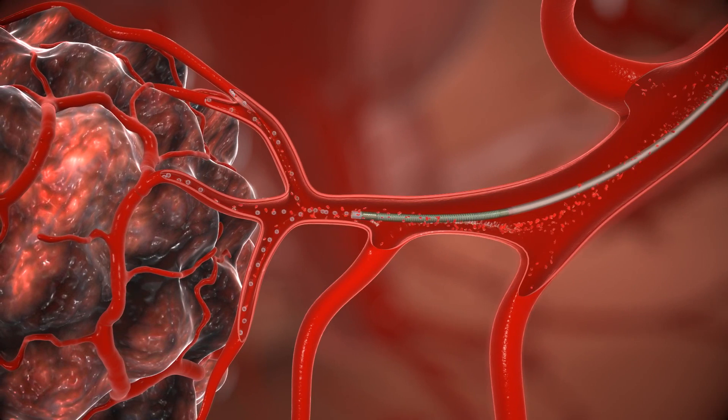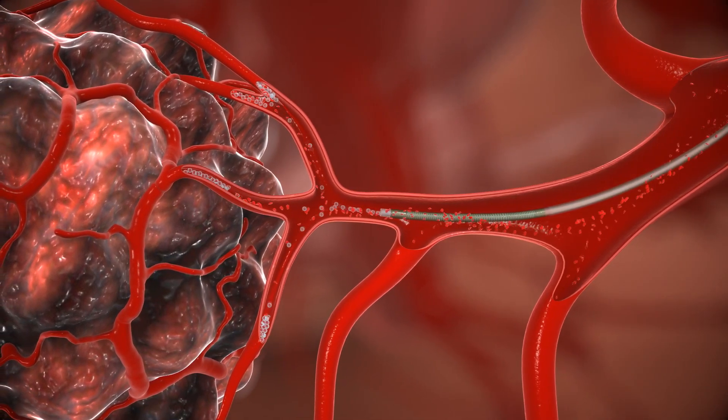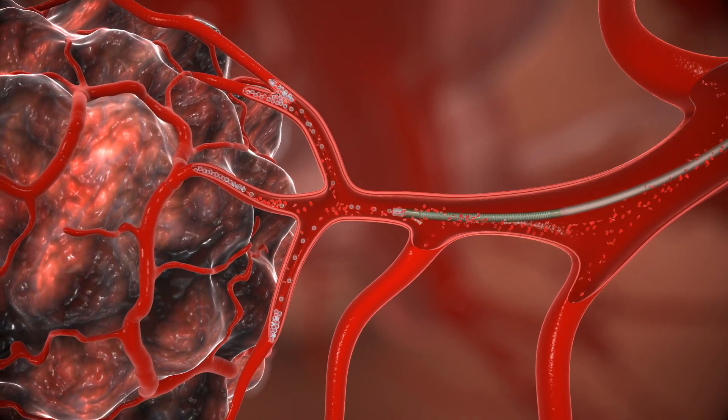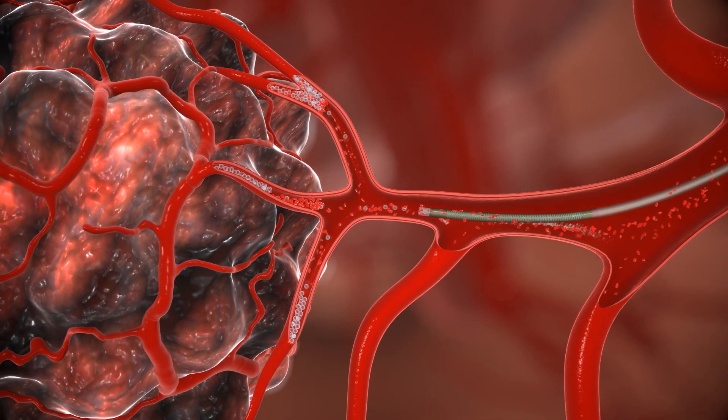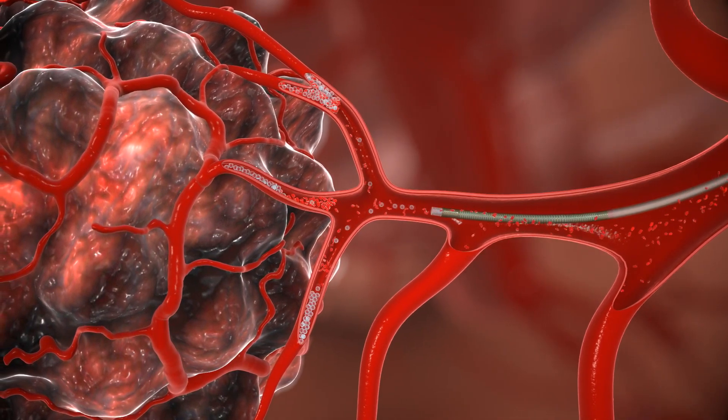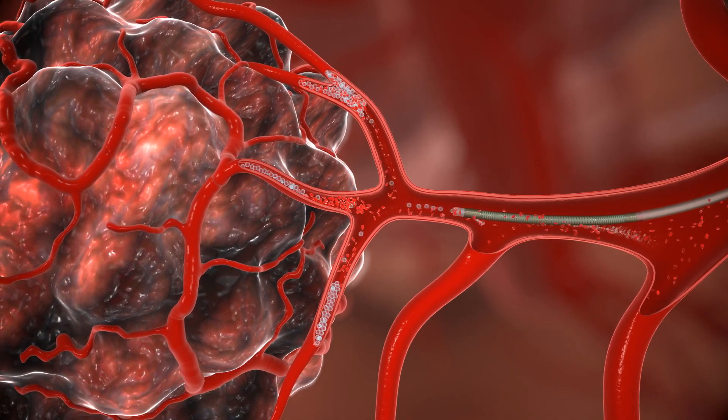The embolic microspheres block blood flow to the tumor to either curtail its growth or destroy it. Since the arterial pathway is so tortuous and multiple tumor feeders typically need to be embolized, the steerable and torqueable angler allows the interventional radiologist to select the optimal tip shapes as required.